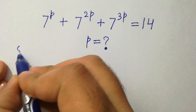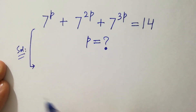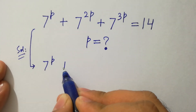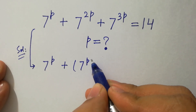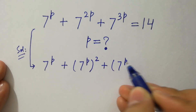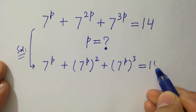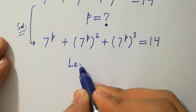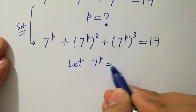Let's have a solution. This problem is same as 7 to the power p, plus 7 to the power p to the whole power 2, plus 7 to the power p to the whole power 3, equal to 14. Let 7 to the power p equal to h.